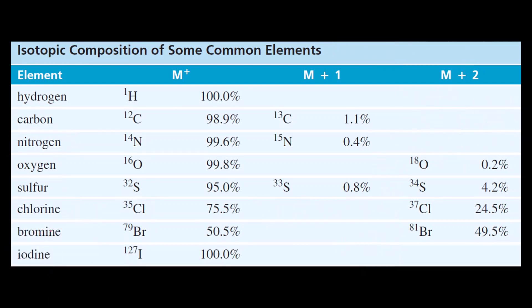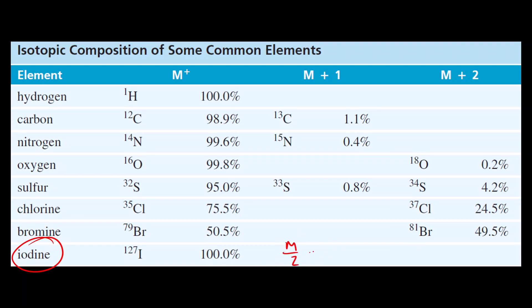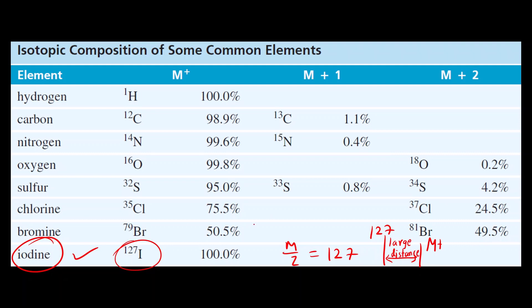For iodine, you will see a peak at m/z = 127, since the atomic mass of iodine is 127. There will be a large distance between the peak at 127 and the M+ molecular ion peak. If this is the case, then the heteroatom is iodine.